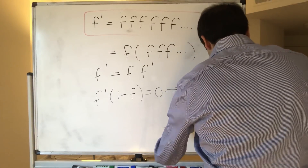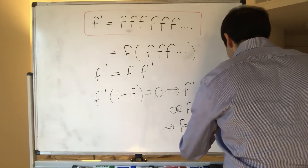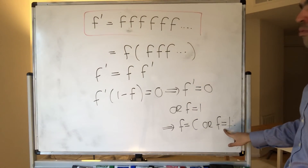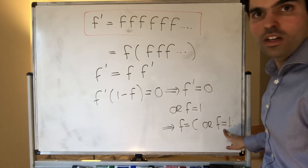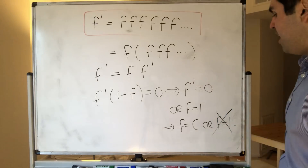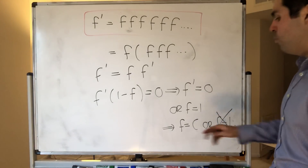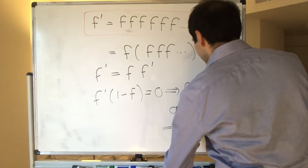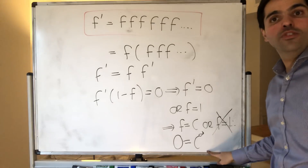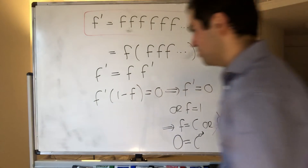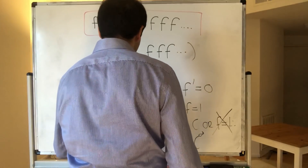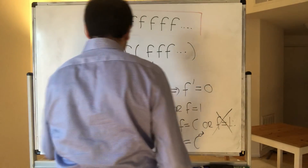In other words, f is constant or f equals 1. But the problem is 1 is not a solution because 1' is 0, but 1 times 1 times 1 etc. is 1, so that doesn't work. For constants, we want c' which is 0 to equal c to the infinity, and in particular if c is between -1 and 1, this works. So at least one solution is: f equals any constant between -1 and 1.